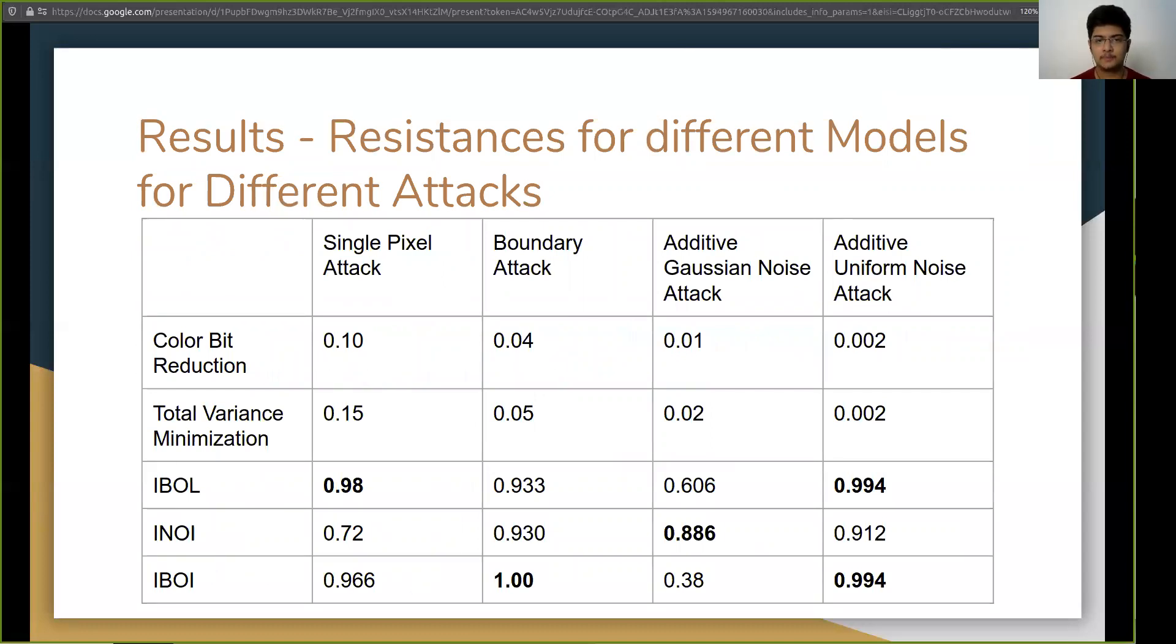So as you can see in this table, for all the four attacks, one of our models IBOL, INOI or IBOI performs the best. In fact for boundary attack, each of the three models has a resistance greater than or equal to 0.93. Note the contrast between color bit reduction and total variance minimization which are also similar techniques in the sense that they modify the input layer. And compared to these techniques which are completely undermined by the modern attacks, our technique is having a great resistance.